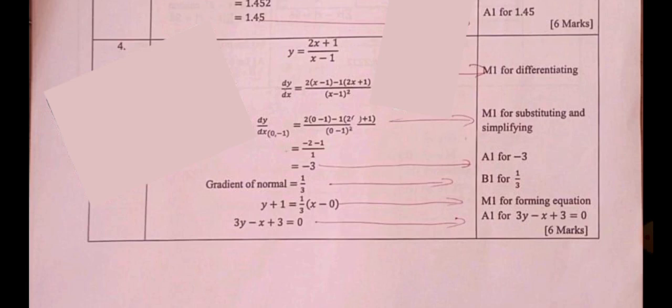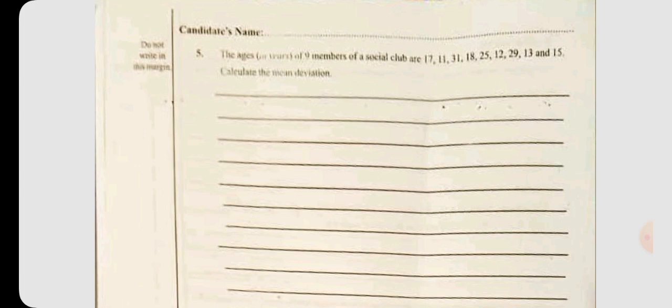The ages of 9 members of a social club are 17, 11, 31, 18, 25, 12, 29, 13 and 15. Calculate the mean deviation.